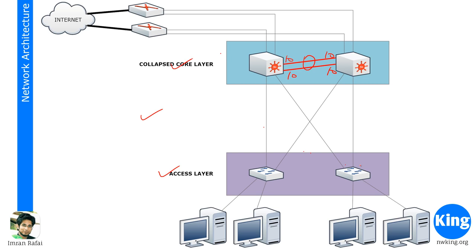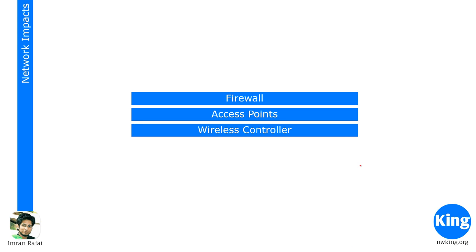This is another form of architecture which is much more efficient for smaller organizations. If you don't have the money and resources, then collapsed core is the way to go. But if you're working for a big organization with the funding, then the three-tier architecture is definitely the way to go. Next, we look at network impacts.